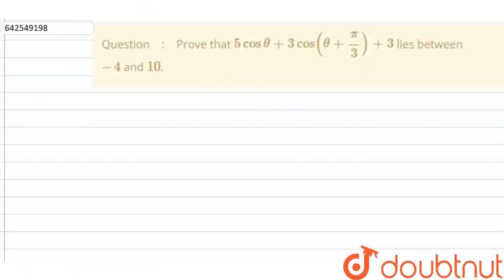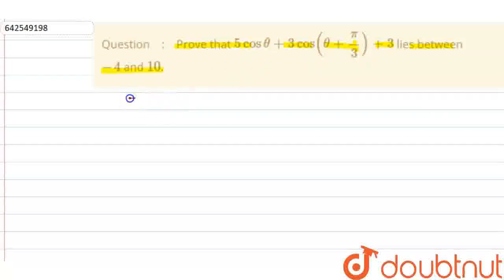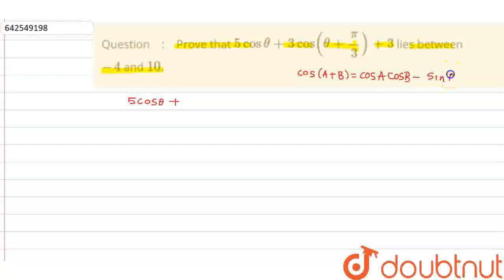Hello everyone. Our question is: prove that 5cosθ + 3cos(θ + π/3) + 3 lies between minus 4 and 10. Now before solving this, we need to remember this formula: cos(A + B) = cosA·cosB − sinA·sinB.